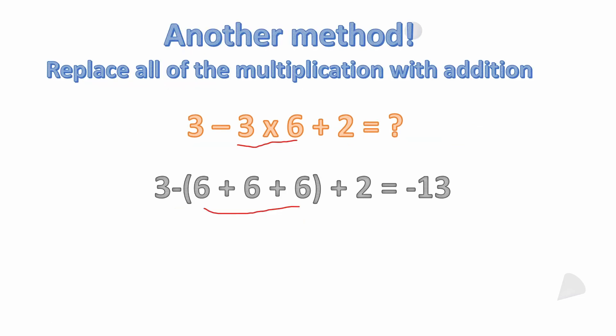Another method: you can replace all the multiplication with addition. Multiplication is just shorthand for repeated addition, that's all it is. So if it bothers you that you have multiplication and you want to go left to right, replace it. 3 times 6 is the same as 6 plus 6 plus 6. So it's 3 minus the quantity of 6 plus 6 plus 6, which becomes 3 minus 6 minus 6 minus 6 plus 2 — still equals minus 13.